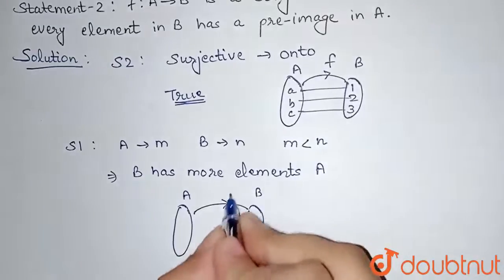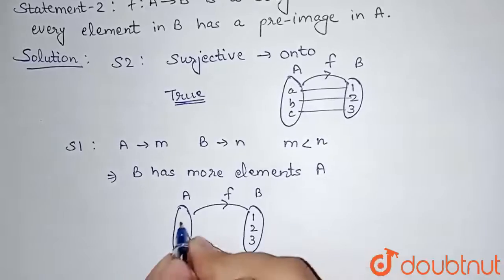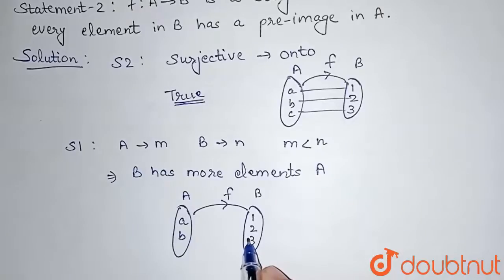And we have defined a function again. So B has more elements. Let's say 1, 2, 3 and here A has only 2 elements. So M less than N condition will satisfy.